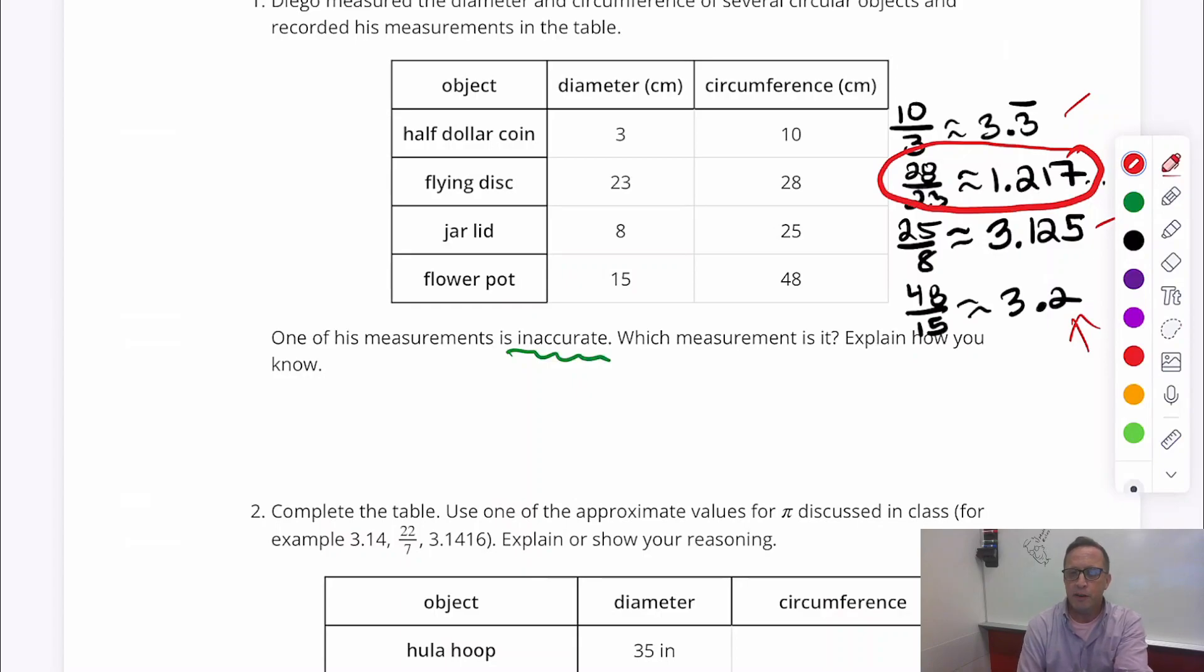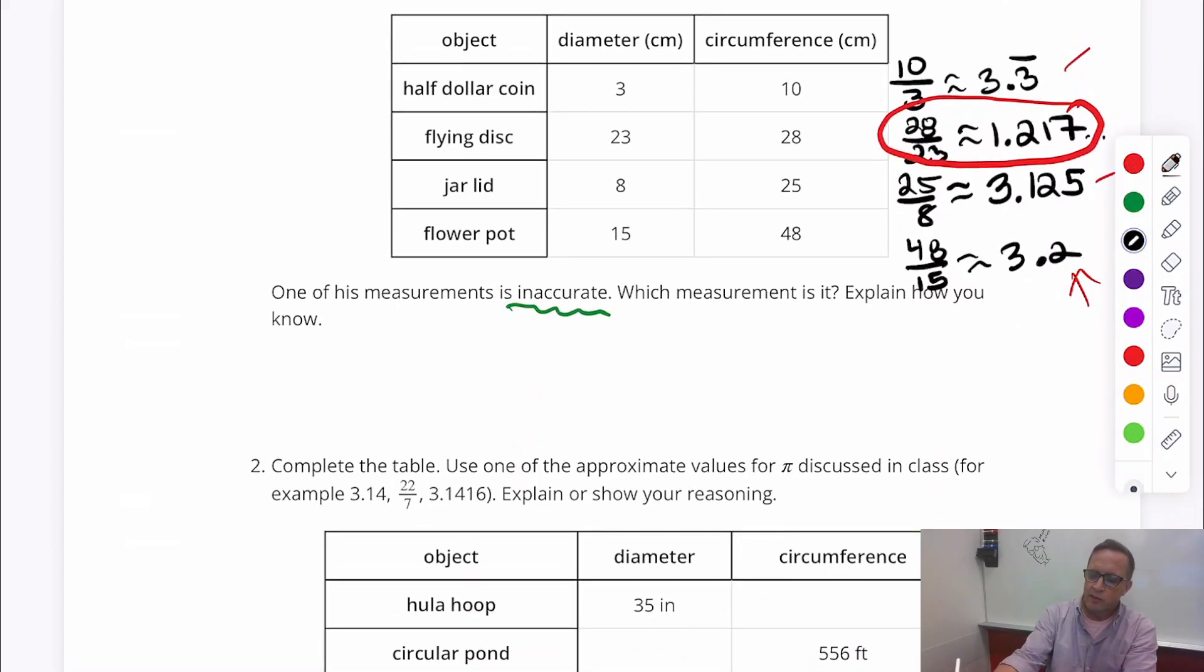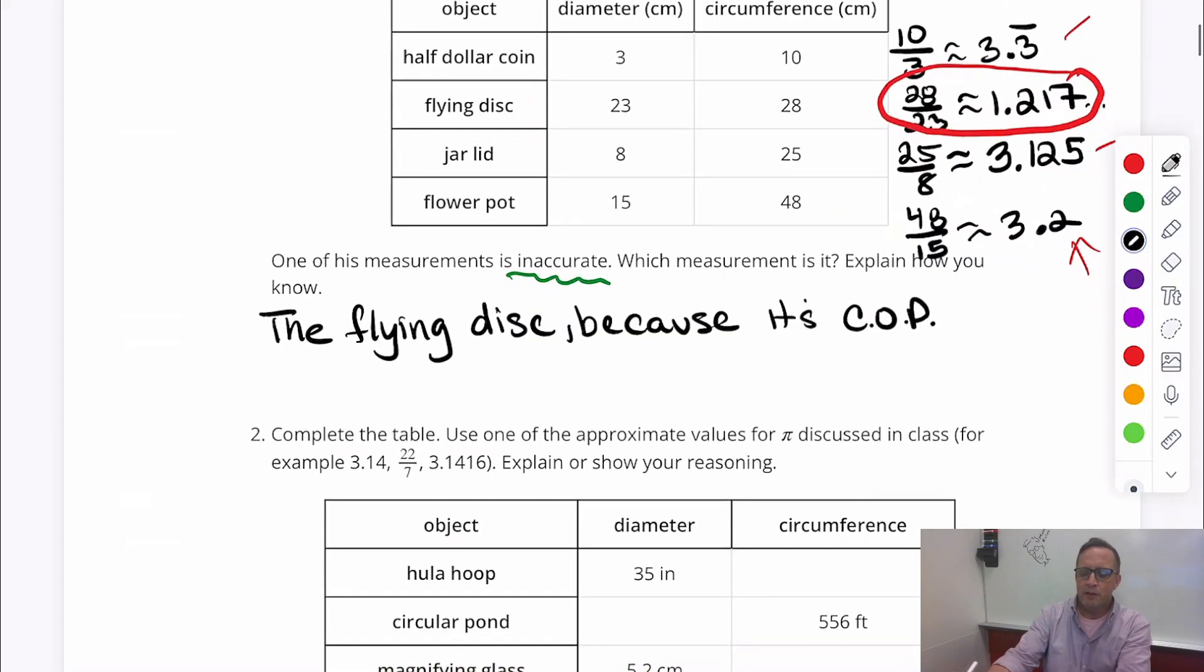1.217. That is going to be it. So I would say it's a flying disk. And I'm going to refer to this as a constant of proportionality. Because, I mean, we're really not supposed to think of it as pi yet. Although we did talk about it. But the flying disk, because its constant of proportionality was different than the other three. Not just a little bit different. It was a lot different. It was like half, less than half.